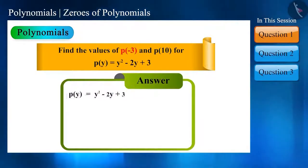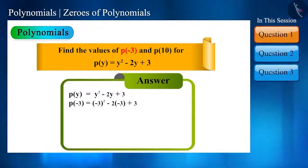So, here the value of p(-3) will be (-3)² - 2(-3) + 3 = 9 + 6 + 3, which is 18.